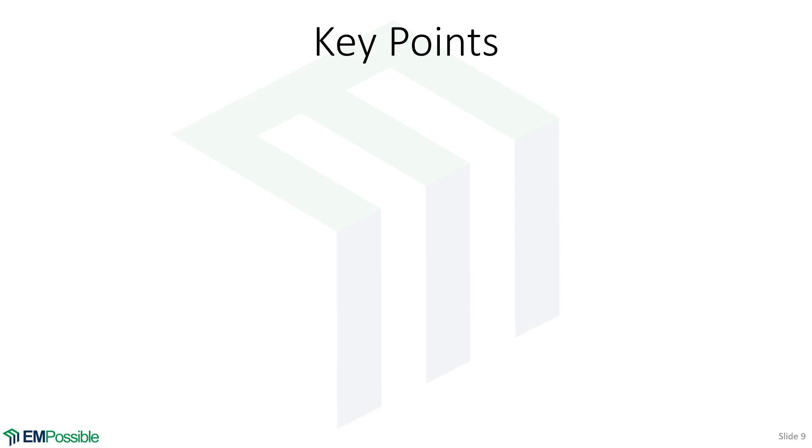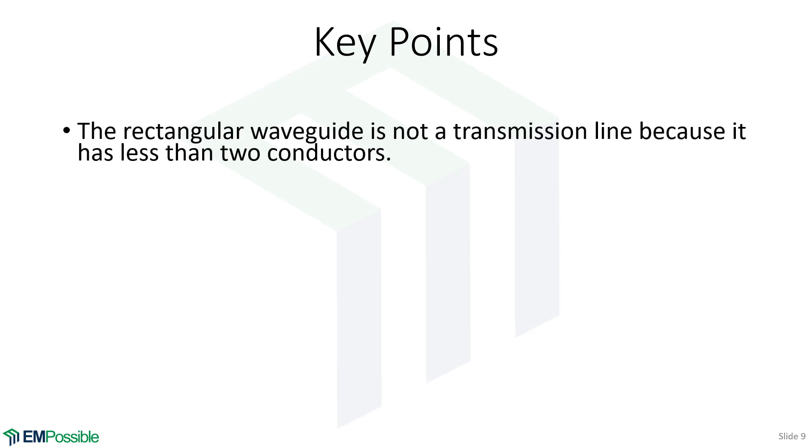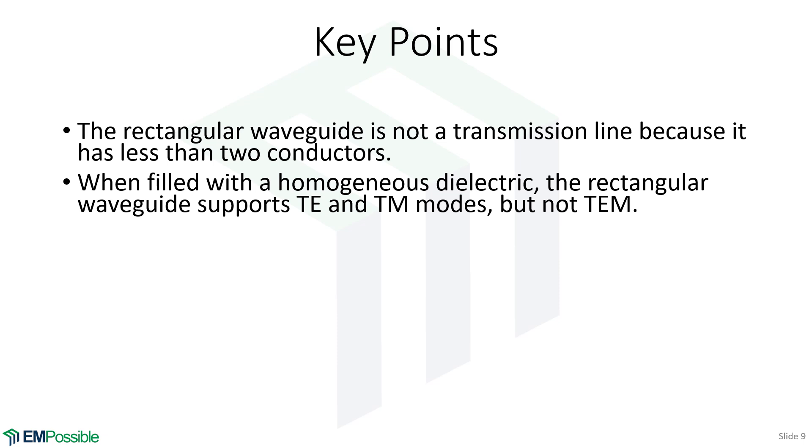Here's some key points from this lecture. The rectangular waveguide is not a transmission line—we know that because it does not have two conductors. So it does not support a TEM mode because it's not a transmission line. But because we put a homogeneous dielectric in our guide, it does support TE and TM modes. If the dielectric were inhomogeneous, we couldn't do anything we've done here. We'd have to go back and do our hybrid mode analysis, which of course is much more difficult. I don't even recommend doing that by hand, but it is much easier to do on a computer.